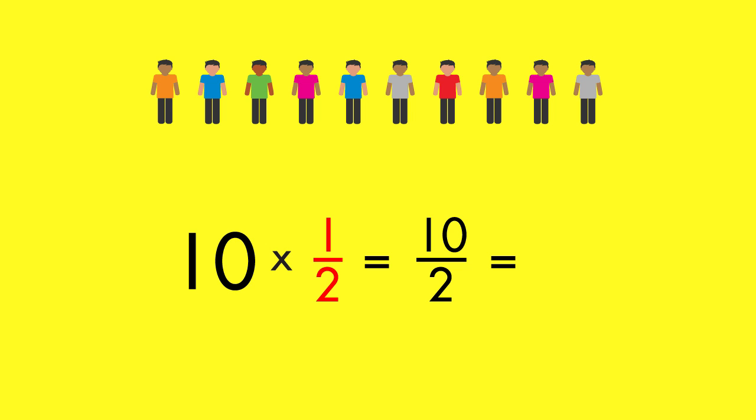When the factor is a fraction less than one-half, the number will get smaller. The product of ten and one-half is five. This makes sense. You know that one-half of a group of ten friends is five friends.